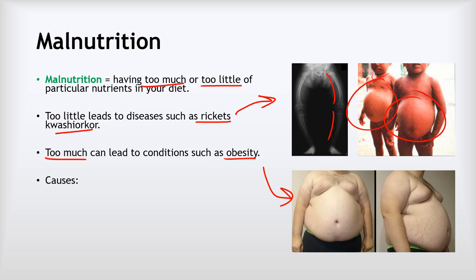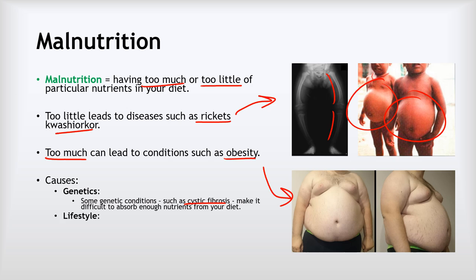In terms of the causes of malnutrition, there are definitely genetic causes — for example, the disease cystic fibrosis makes it difficult to absorb enough nutrients from your diet, making conditions like rickets more likely. Lifestyle is also a factor: poor diet has a massive effect on malnutrition, as does lack of physical activity.